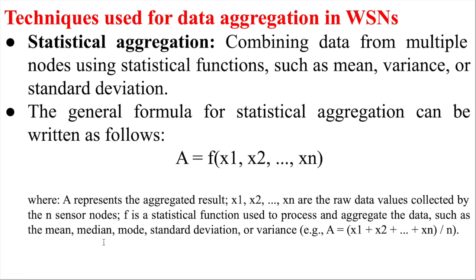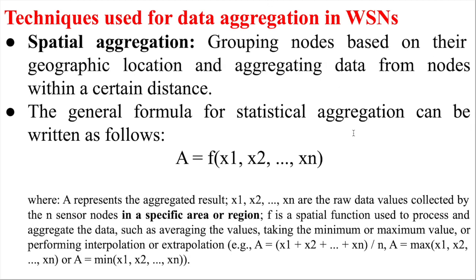Sometimes mean is good, sometimes median, mode, or standard deviation — it depends on your data types and your application, which type of statistical aggregation is suitable. In most cases, people use the average: whatever data comes, take the average and transmit it. This is because they assume the environment is the same and sensor types are the same, so both sensors' data should also be similar.